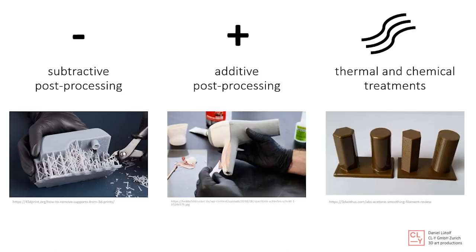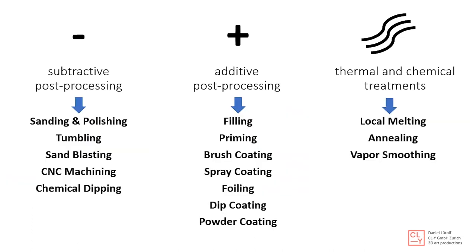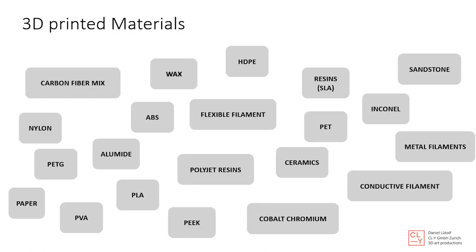In post-processing we have three different groups. We have the subtractive post-processing, the additive post-processing, and the thermal and chemical treatment. Here is a summary of all the post-processing we can do to a 3D print. In the subtractive area we have sanding and polishing, tumbling, sandblasting, CNC machining, and chemical dipping. On the additive side we can fill, prime, brush coat, spray coat, foiling, dip coat, and pilot coat. For thermal and chemical treatment, we can do local melting, annealing, and vapor smoothing.